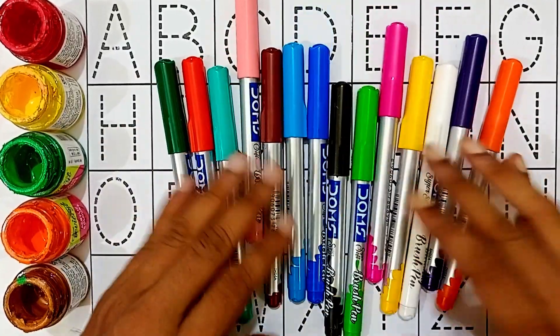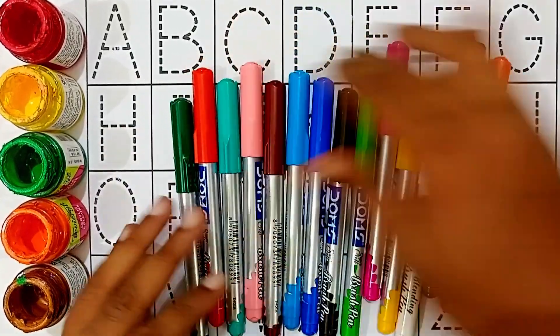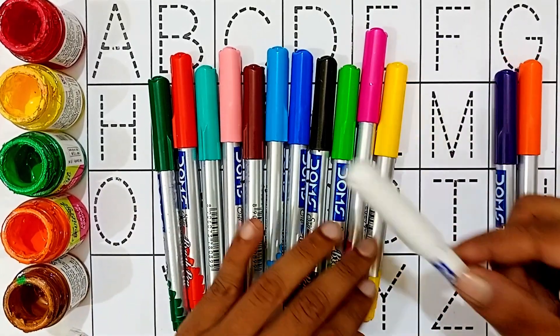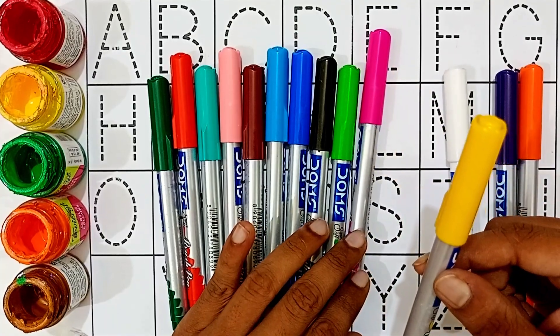Hello kids, let's learn some colors, then reading and writing ABCD. Okay. Orange color, violet color, white color, yellow color.